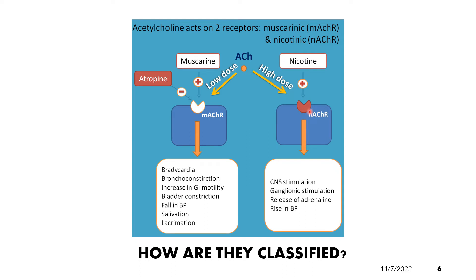Nicotinic receptors are activated by acetylcholine at a high dose, while muscarinic receptors are activated at a low dose. This is confirmed by the action of muscarine and nicotine: muscarine is an agonist of the muscarinic receptors, and nicotine is an agonist of the nicotinic receptors. The first set of actions produced by a low dose of acetylcholine can be reproduced by muscarine, hence the receptors are named muscarinic receptors. Similarly, the second set of effects from a high dose can be reproduced by nicotine, hence the receptors are named nicotinic receptors.